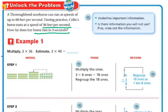Then it says, is there any information that you will not use and cross out that information? Well, I really don't need to know that a horse can run at a speed of 60 feet per second. I just need to know how much her horse runs in order to find out how much it can run in three seconds. So I'm actually going to cross this out, because I don't need that information.